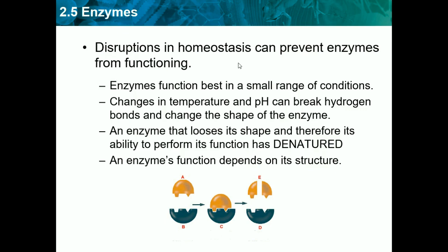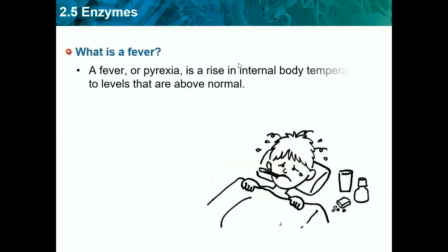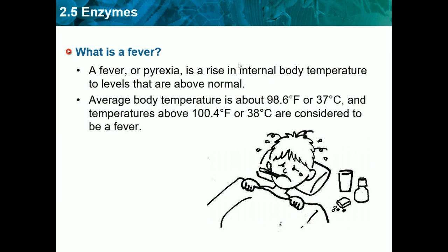Structure causes function. Each enzyme has its own structure and therefore its own function, so there's not just one type of enzyme — there are many different types. What is a fever? A fever, or pyrexia, is a rise in internal body temperature to levels above normal. Average body temperature is about 98°F, and temperatures above 100.4°F are considered a fever. If our temperature is off, our enzymes might stop working, so fevers are very fatal if they get too high.